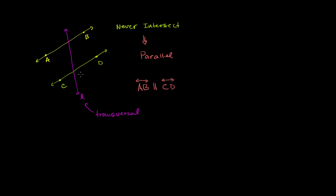I want to think about the angles that are formed and how they relate to each other — the angles formed at the intersection between this transversal line and the two parallel lines. Starting with this angle right over here, we know that it's going to be equal to its vertical angle. We also know this angle right over here is going to be equal to the angle at its vertical position. Sometimes you'll see a double angle mark to show that these two are equal and these two are equal.